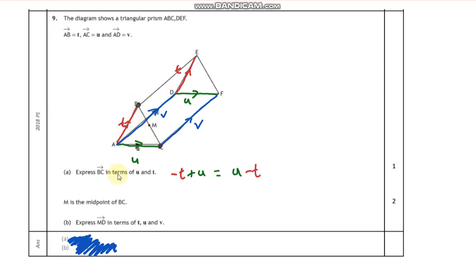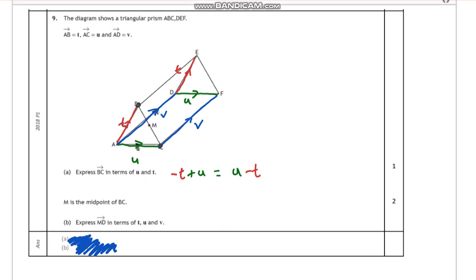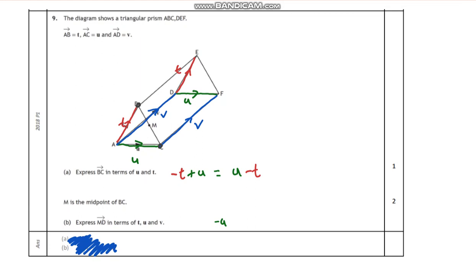M is the midpoint of BC, bang in the middle. To express the vector from M to D in terms of those vectors, I'm trying to get from M all the way to D. I'm definitely going negative u and plus v.